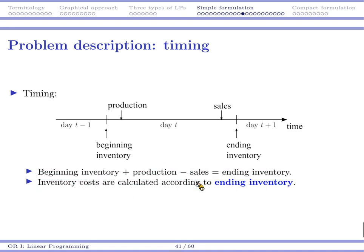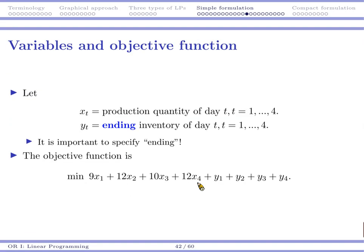And we follow the convention to say that inventory costs are calculated according to your ending inventory. So whatever amount you have for tonight, you carry them to the next day, you pay inventory. So if you produce 150 units for today and then you sell those 150 units on that day, there is no inventory cost to occur.